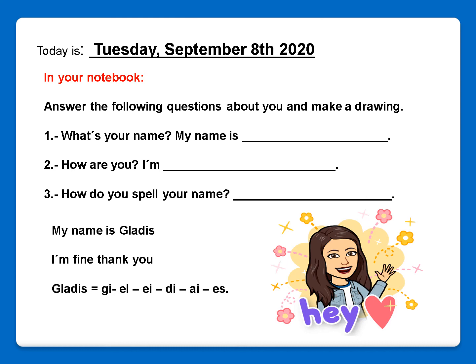Number two: How are you? I'm fine. I'm good. I'm okay. Number three: How do you spell your name? Here you have to spell your name with the sound of the alphabet, like my example.